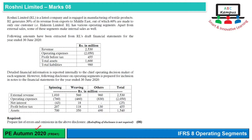Roshni Limited is a listed company and is engaged in manufacturing of textile products. RL generates 30% of its revenue from export to Middle East, out of which 60% are made to only one customer, Hakeem Limited. So that is one major customer, aur exports bhi hai, iska matlab hai ki geographical information bhi dheni hogi. RL has various operating segments; apart from external sales, some of these segments make internal sales as well.